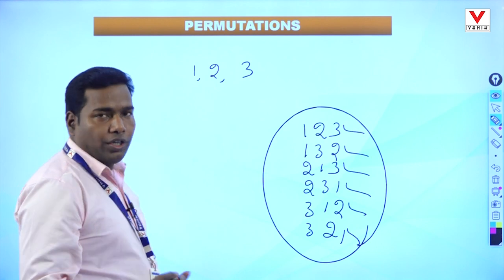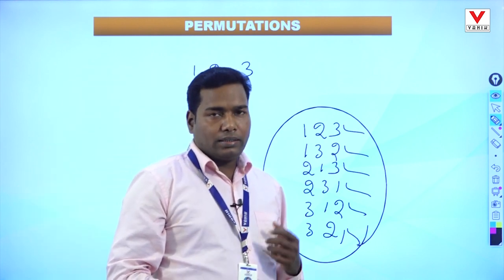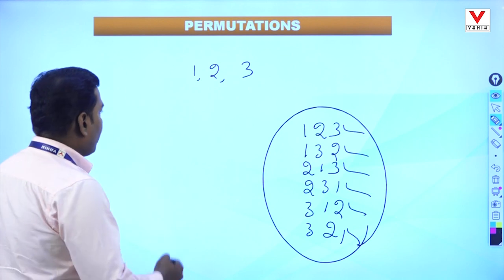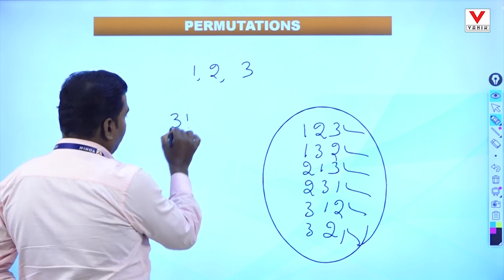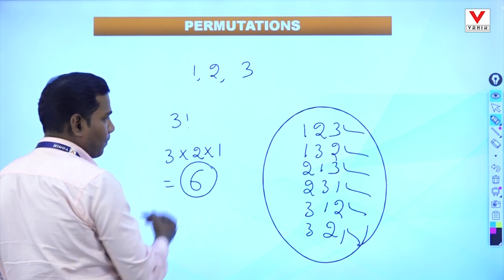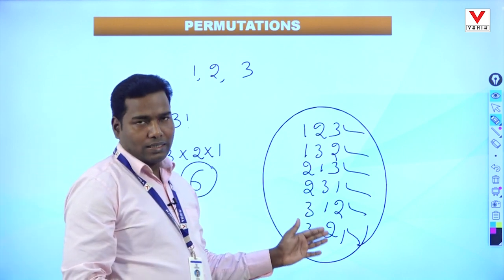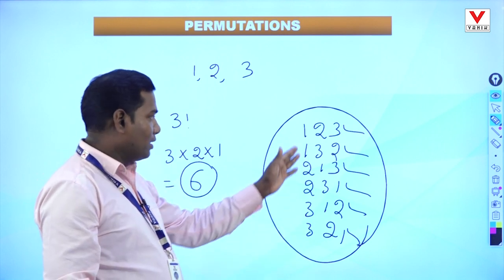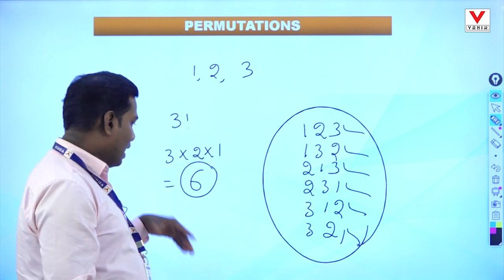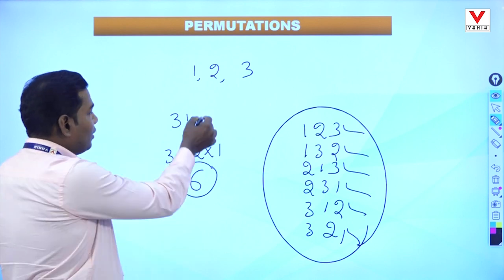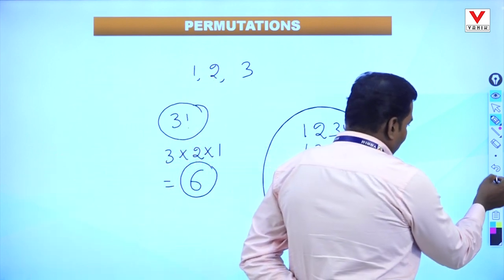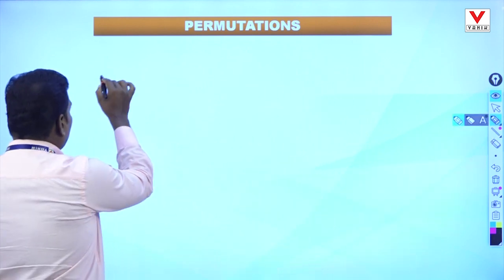In another way, how do we get how many three-digit numbers can be formed using digits 1, 2, 3? That is your 3 factorial. 3 factorial means 3 into 2 into 1, which equals 6. This is the first method: we can arrange the numbers as 123, 132, 213, 231, 312, 321 — there are six numbers. The next method is 3 factorial, which equals 6.